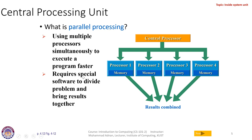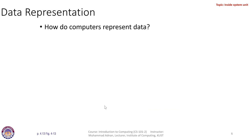After the processors complete their tasks, the results are combined by the control processor. Using multiple processors simultaneously to execute a program faster is called parallel processing. It requires special software to divide the problem and bring results together — this software is part of the operating system. Nowadays Core i7, Core i3, and Core i5 computers all have multiple processors, which is why computer speed increases day by day. Octa-core means eight processor cores, and quad-core means four.